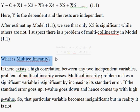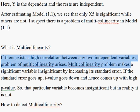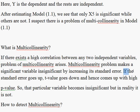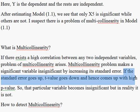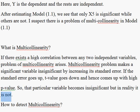What is multicollinearity? If there exists a high correlation between any two independent variables, the problem of multicollinearity arises. Multicollinearity makes a significant variable appear insignificant by increasing its standard error. If the standard error goes up, the t-value goes down, and hence we get a high p-value, so that particular variable becomes insignificant — but in reality it is not.